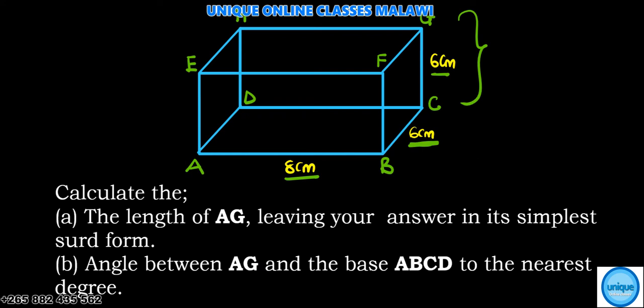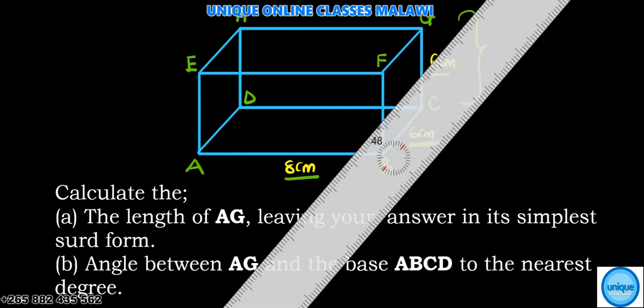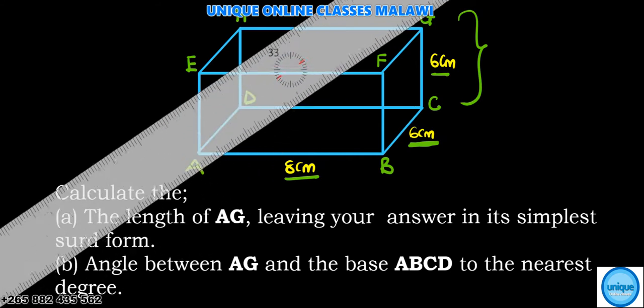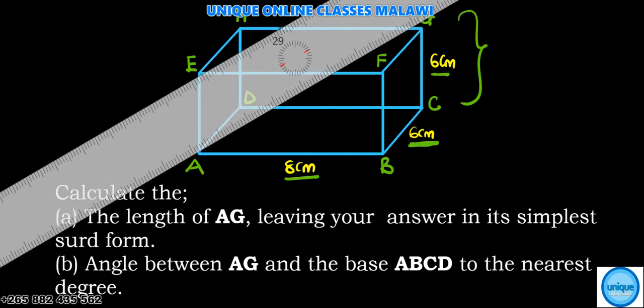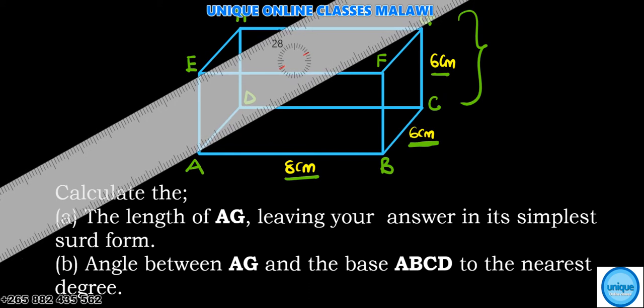Line AG - let me draw a line using my ruler. This is the line from corner A to G at that corner. We also need to find the angle between line AG and the base.